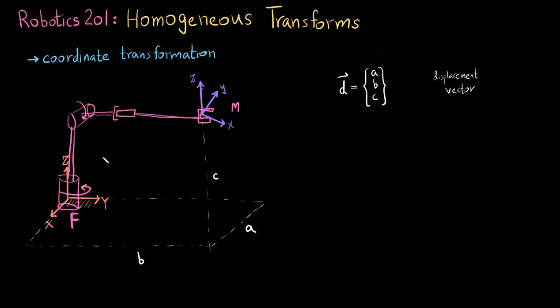For this case, once I do the displacement, my Z axis would be aligned with the Z axis and my X axis would be here. So what I would do is perform a positive rotation about the Z axis by whatever this angle is — theta — in order to get this aligned. That would ensure that my moving frame is now expressed with respect to the fixed frame.